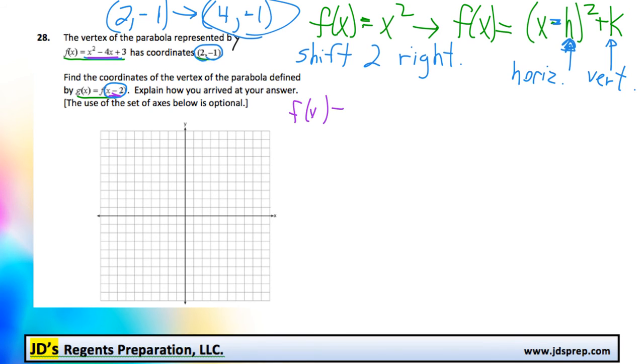So, f of x would be equal to x minus 2 squared minus 4 times x minus 2 plus 3. Now, I'm going to skip some steps just to save time, but if you were to expand this function and combine all the like terms,